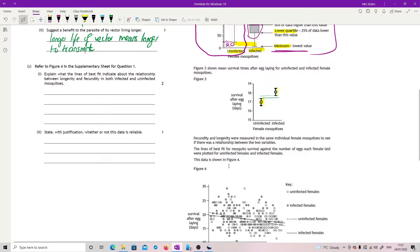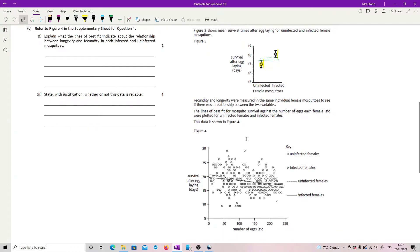Okay, refer to figure four. Explain what the lines of best fit indicate about the relationship between longevity and fecundity in both infected and uninfected mosquitoes.